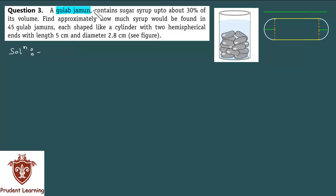A Gulab Jamun contains sugar syrup up to about 30% of its volume. In this question, you have a Gulab Jamun in which the sugar syrup content is 30% of the volume of sugar syrup.